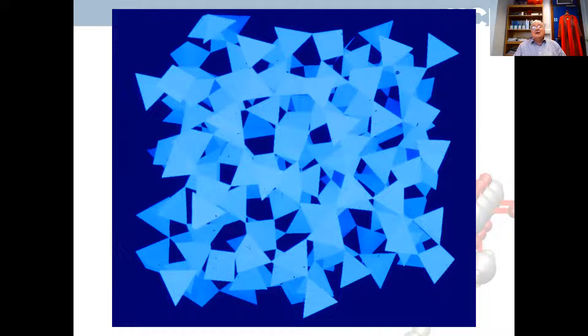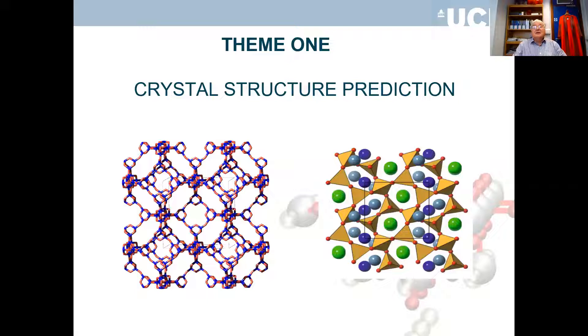Later, I was also interested in modelling amorphous materials. A model developed by Molecular Dynamics melt-quench for the structure of amorphous silica produced a beautiful corner-sharing network structure with no long-range order, which ties in pretty well with neutron data — again based on relatively simple interatomic potentials. So that's the history; let's talk about the present.